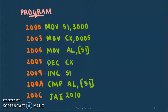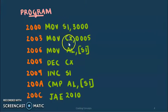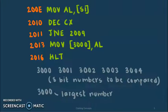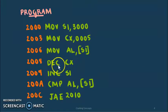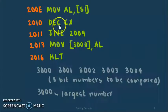Now we move on to the second program, which is to find the largest number from a set of given numbers. The numbers in orange are the addresses where the lines of code will be stored. The registers used here are SI, CX, and AL, since the numbers we will be using are 8-bit numbers. The instructions used are move, decrement, increment, compare, jump-when-above-or-equal, jump-when-not-equal, and finally halt.